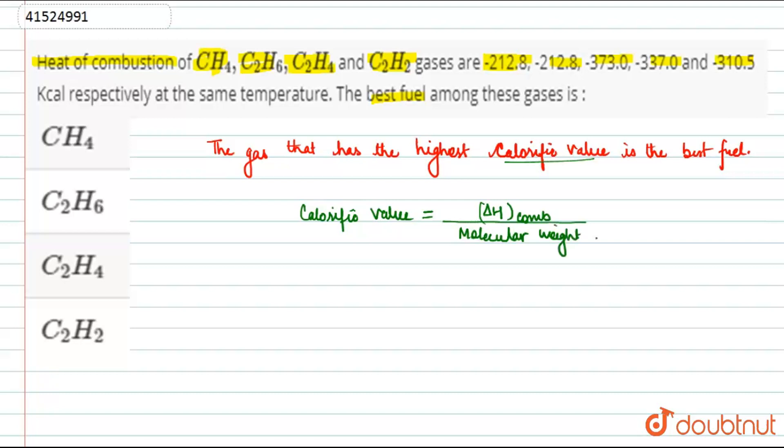Then we will get their calorific value. So here we calculate the molecular weights: CH4 is 16, C2H6 is 24 plus 6 which is 30, C2H4 is 24 plus 4 which is 28, and C2H2 is 24 plus 2 which is 26.